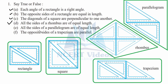Part E - all the sides of a parallelogram are of equal length. This is false. Only the opposite pairs of sides are of equal length. The adjacent sides are not equal to the opposite sides; only opposite sides are equal to each other.